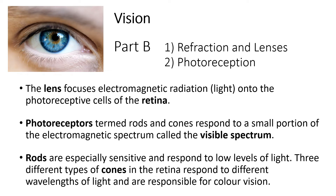This is divided into two parts. In the first part, we'll look at refraction — the bending or redirection of light as it goes from one medium to another. For instance, when light goes from air to glass it can be refracted, and similarly when light goes from air to the lens of your eye it can be redirected. Then we'll talk about photoreception, which occurs in the rods and cones — the photoreceptors within the retina that absorb photons and send a signal to your brain.